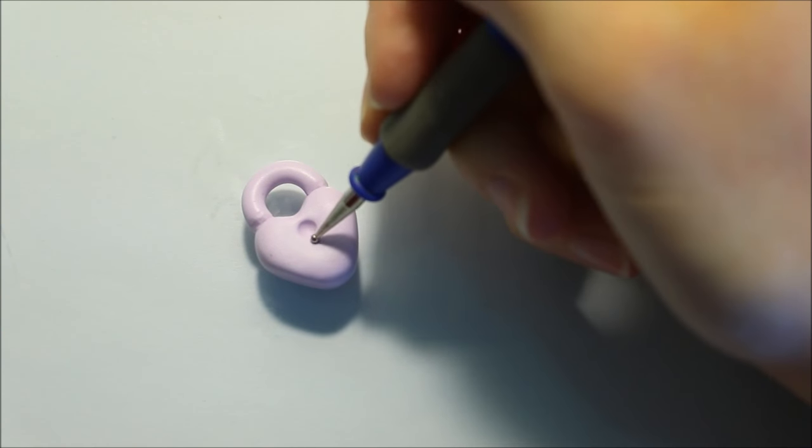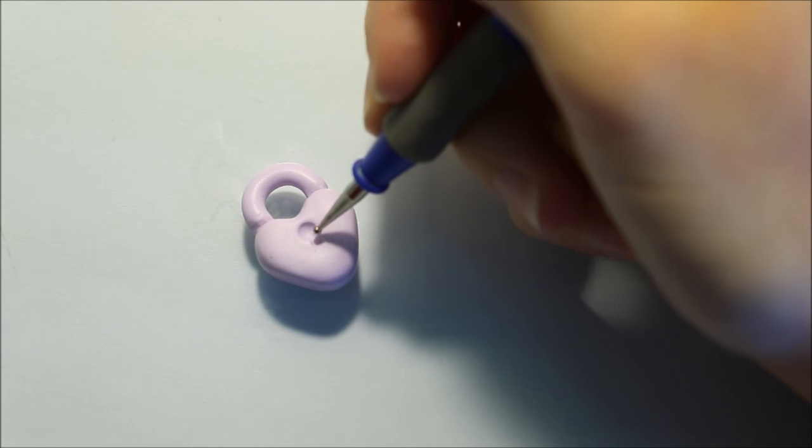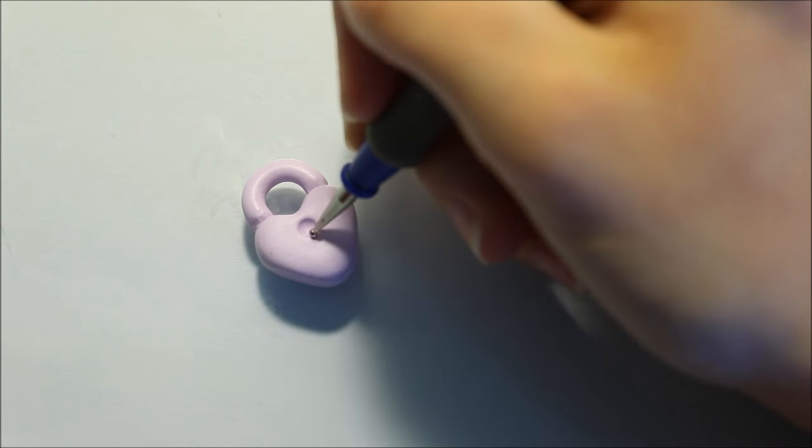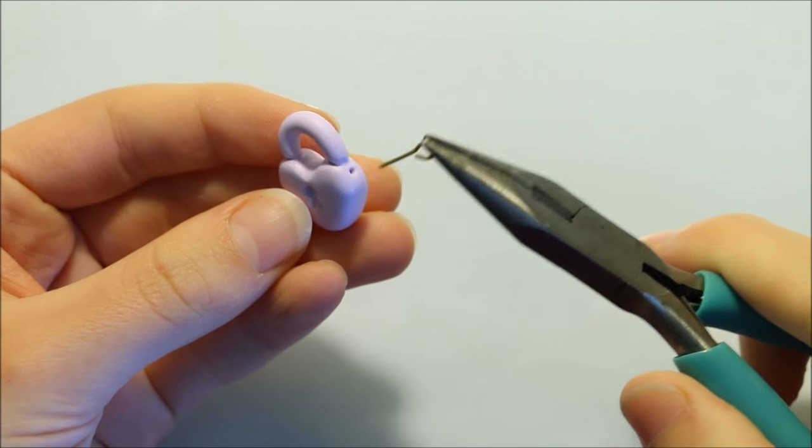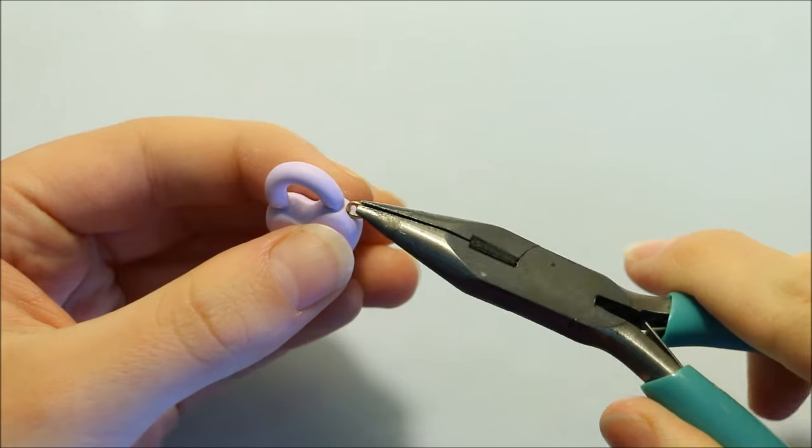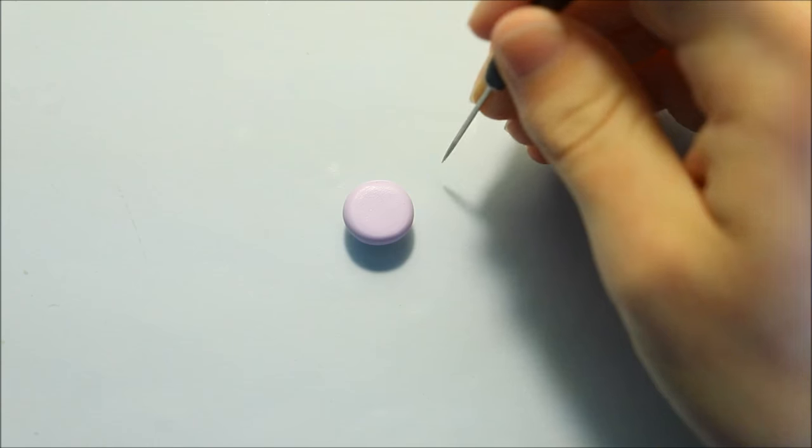For the keyhole, I firstly made an indent in the center of the lock using one of my larger dotting tools and then took one with a smaller tip to make the little triangle bit that extends off the end of it. Now add an eye pin—I chose a gold one to match the gold glitter—and then put it aside while we work on the key.